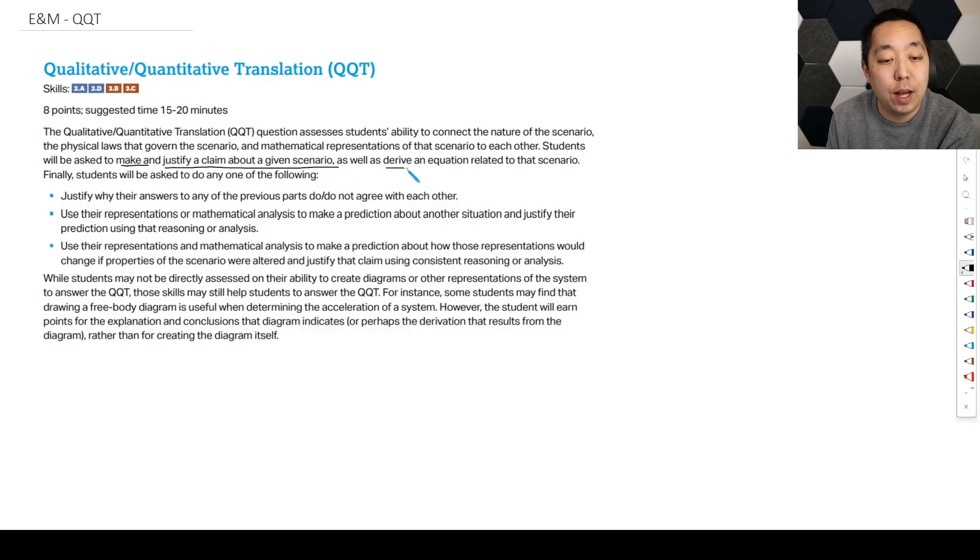You're also going to derive an equation. So this is a standard derivation like we've done before, and then you will do one of the following things, one of these three things. You may justify whether these two are consistent with each other or aligned. That's pretty common. The other two are about predicting.